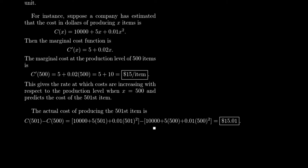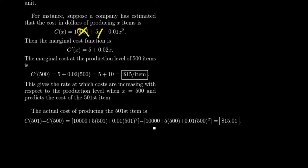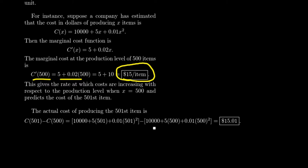The derivative of the cost function by the power rule is straightforward: C prime of x equals 5 plus 0.02x. In fact, many business students learn to compute this without fully knowing what a derivative is — they're told that for a quadratic cost function you drop the constant, bring down the exponent, and multiply. They've learned derivative rules without necessarily knowing all the details. The derivative rules we've developed make calculating marginal cost very easy. So the marginal cost at a production level of 500 items is C prime of 500, which gives $15 per item.